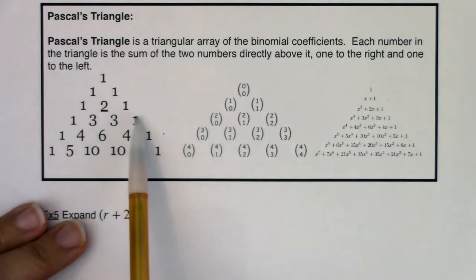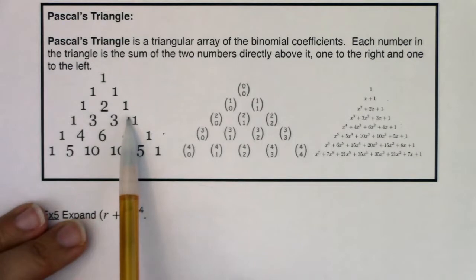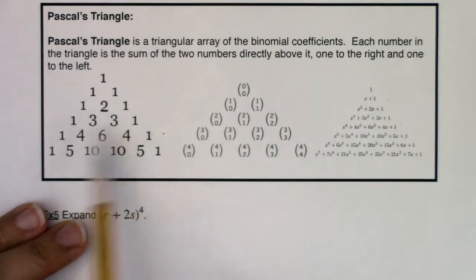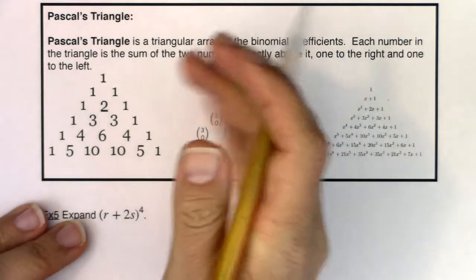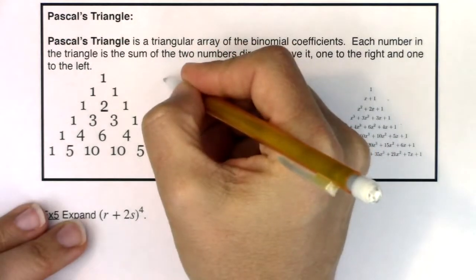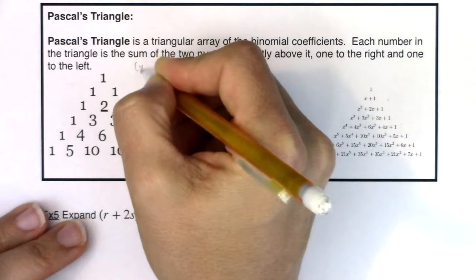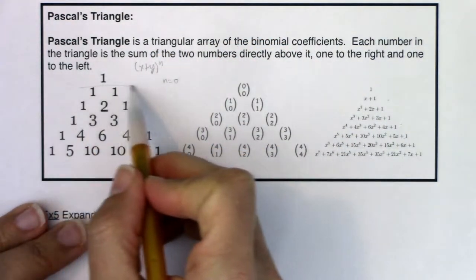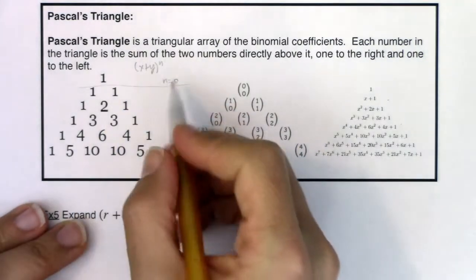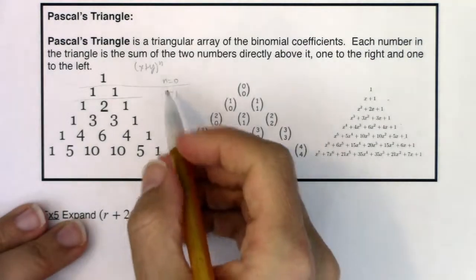I hope these numbers sound familiar, especially for these two levels. We've seen these patterns before — especially one, three, three, one and one, four, six, four, one — when we were expanding binomials raised to the third power or the fourth power. This triangle corresponds to expanding a binomial x plus y to the nth power, starting at the n equals zero level.